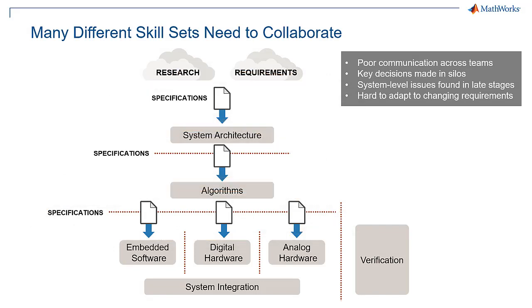And when there's incomplete information, assumptions get made or decisions get made locally, and often lead to issues that only arise when the system comes together at the end of the project and fixing them is costly.